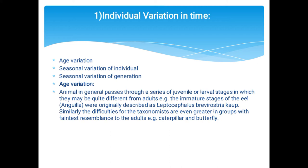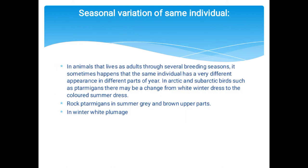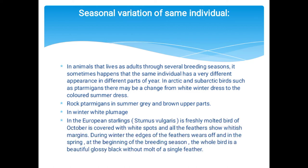Seasonal variation of the same individual: in animals that live as adults through several breeding seasons, the same individual may have a very different appearance in different parts of the year. In arctic and subarctic birds such as ptarmigans, there may be a change from white winter dress to colored summer dress. European starlings like Sturnus vulgaris freshly molted in October are covered with white spots and whitish feather margins during winter. By spring, edges wear off and the bird is beautifully glossy black without a single white feather.